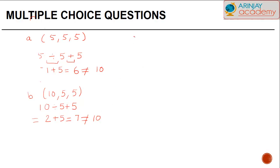Now the C option is 0, 5, 5. 0 divided by 5 plus 5. It will be 0 plus 5 or 5, which is not again equal to 10.